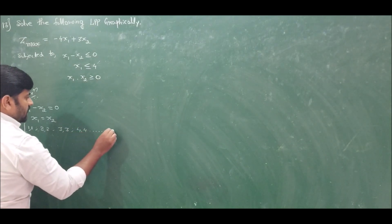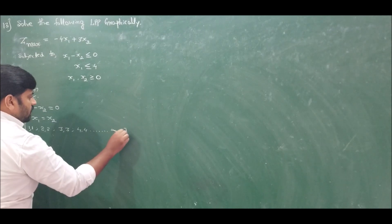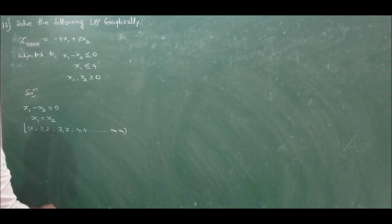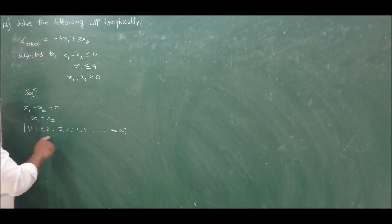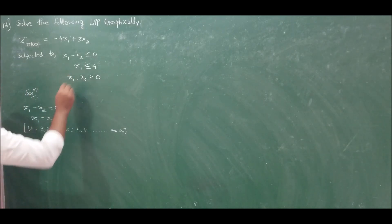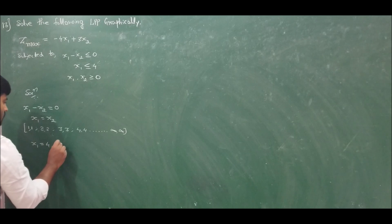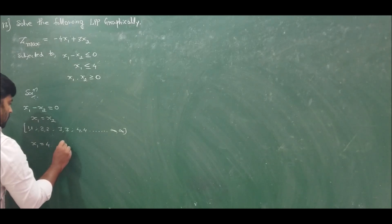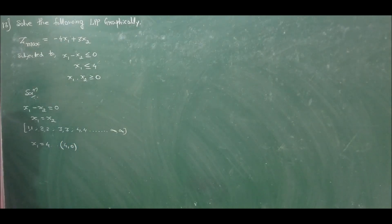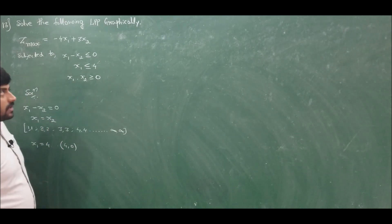This gives a line extending to infinity — a line at 45 degrees. From the second constraint, x1 = 4, so the coordinate is (4, 0). These are the two constraints we have.